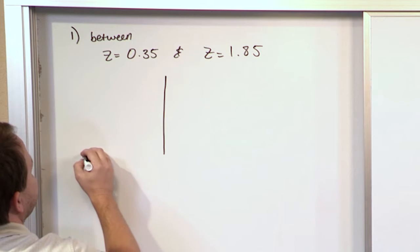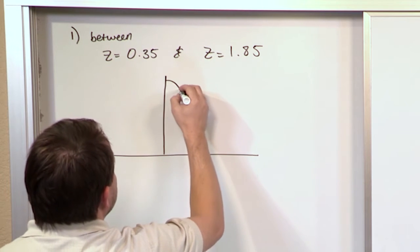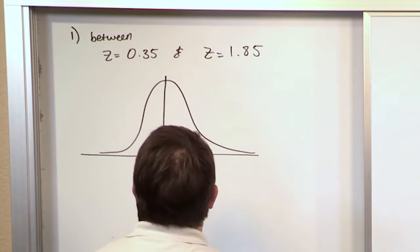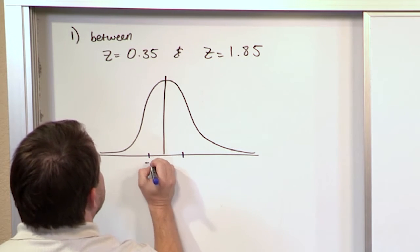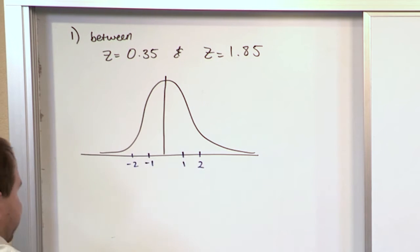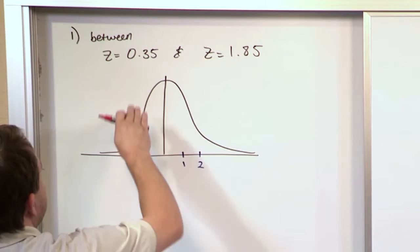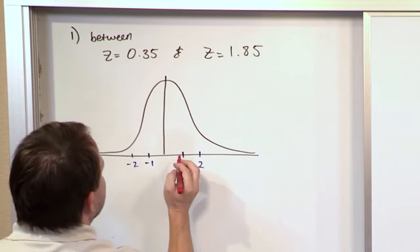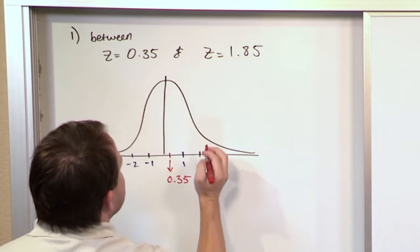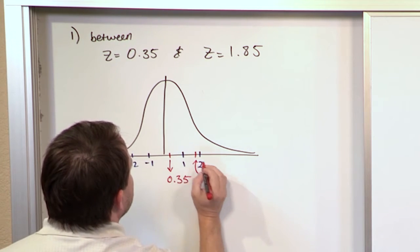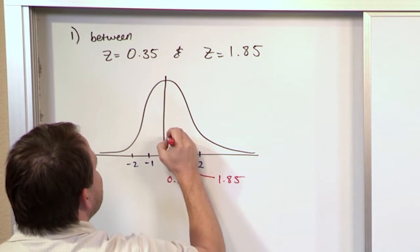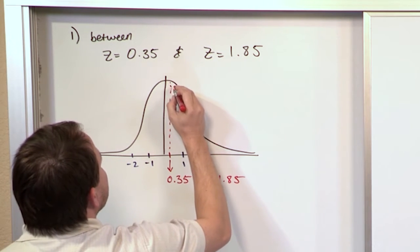This is a different kind of problem. If this is your standard normal distribution, then plus 1, minus 1, plus 2, and minus 2 are marked out. I'm interested in a z value of 0.35, which is down here somewhere, and 1.85, which is over here. I'm trying to find the area between them — only the area that lies between these two values of z.